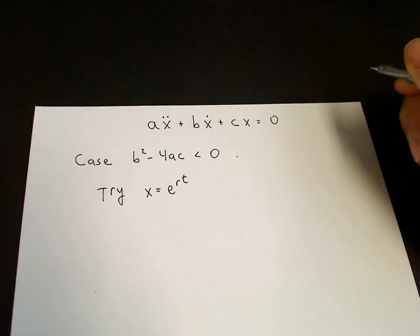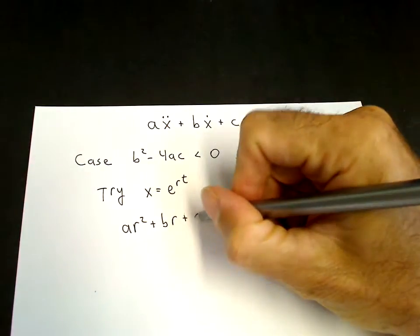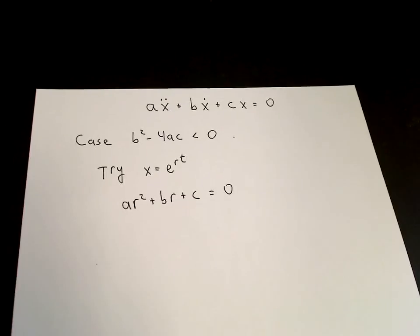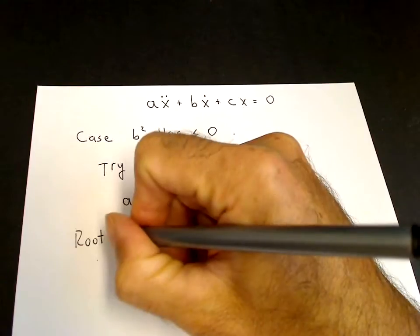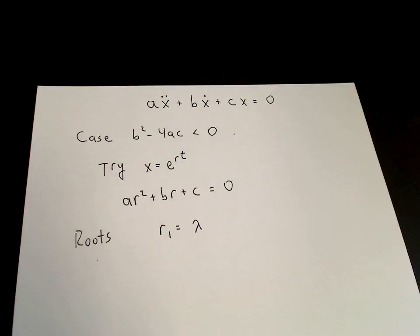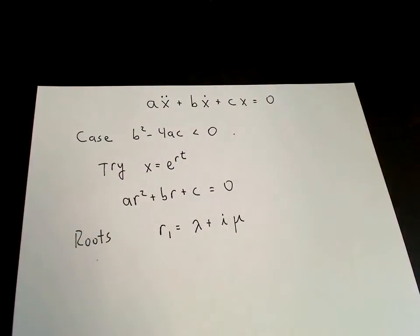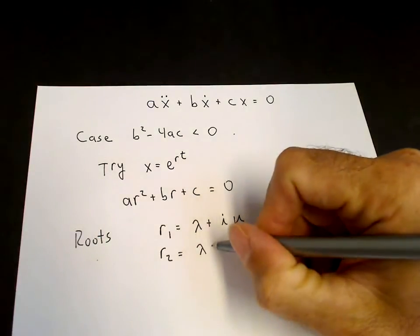we end up with ar squared plus br plus c equals zero. With b squared minus 4ac negative, we have two roots which we can write in the form r1 equals lambda, which is minus b over 2a, plus i times mu, where mu is the square root of 4ac minus b squared over 2a. And then we also have the complex conjugate root.